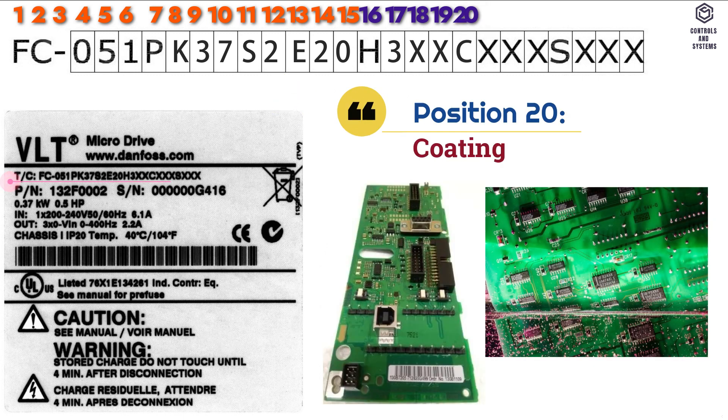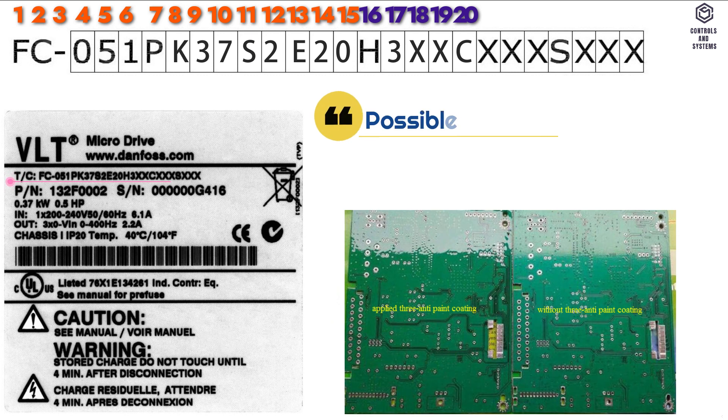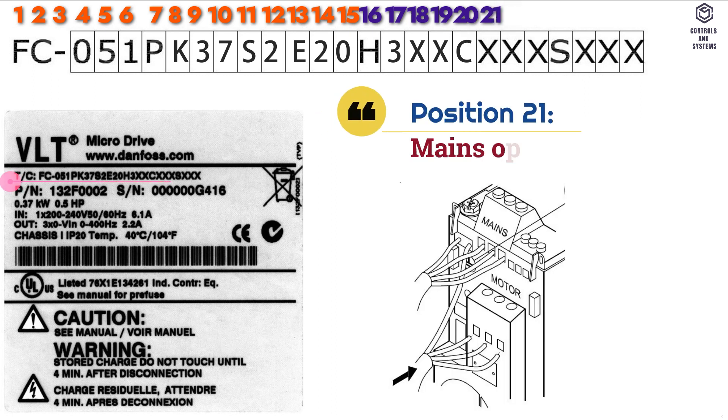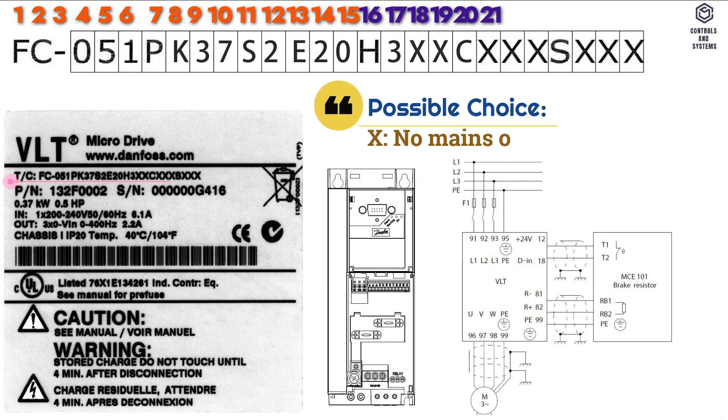Position 20 is coding PCB, possible choice is C that means coded PCB, X that means no coded PCB. Position 21 is mains option, possible choice is no mains option.